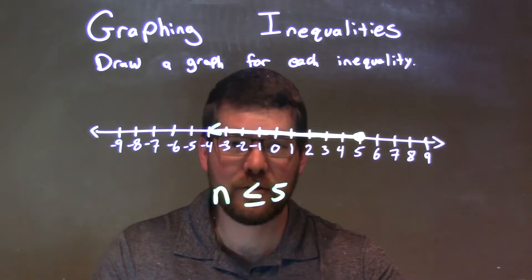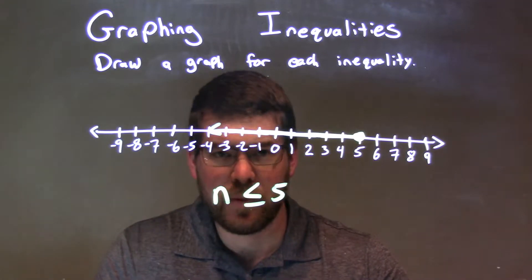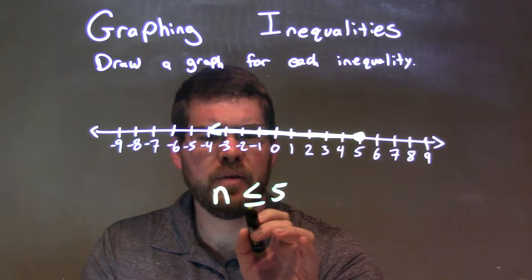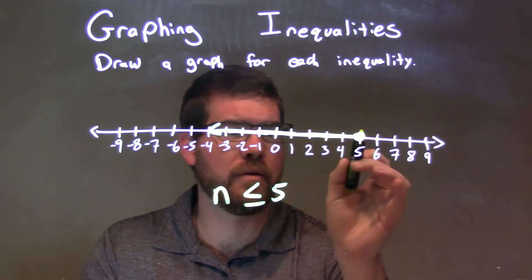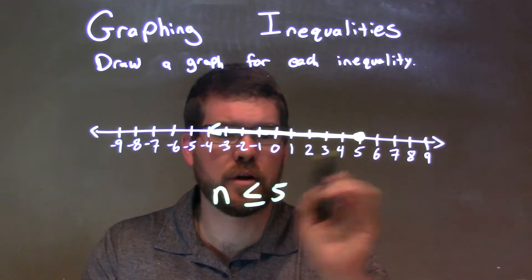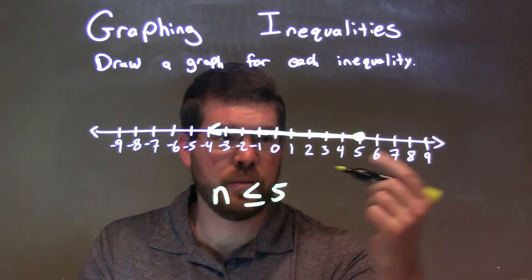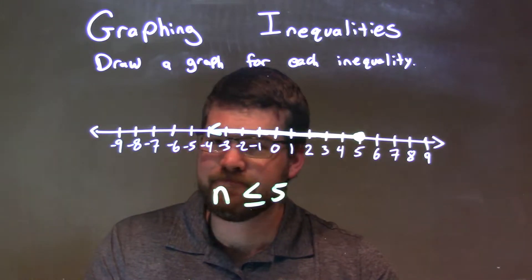And then we have our answer. Quick things to normally think about here: the equal-to sign underneath means we have a closed circle at 5, and the less-than side means we've shaded to the left. And that's it.